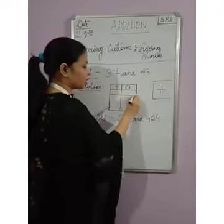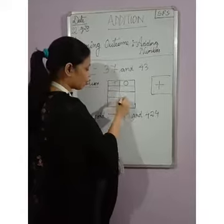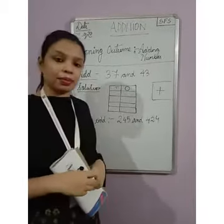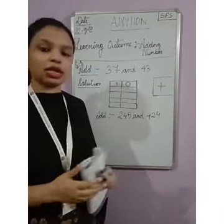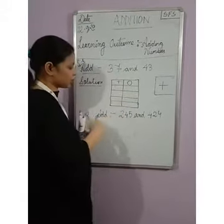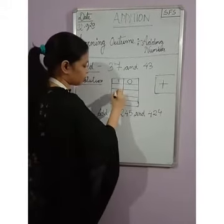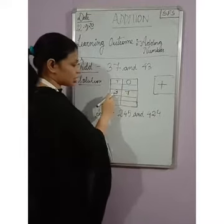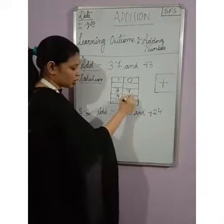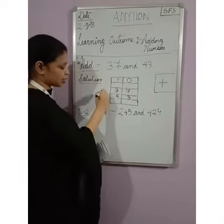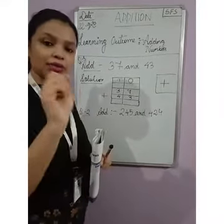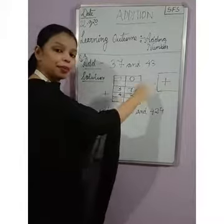Since the number might involve regrouping, we need to leave a row to show the numbers carried over. In addition, there is also regrouping, so we have to carry over. The first number is 37, so 3 goes in the 10s column and 7 in the 1s column. The second number is 43. The sign for addition is plus.